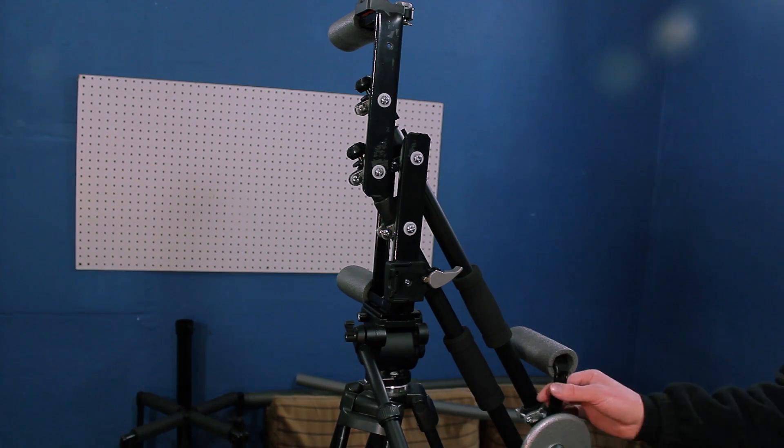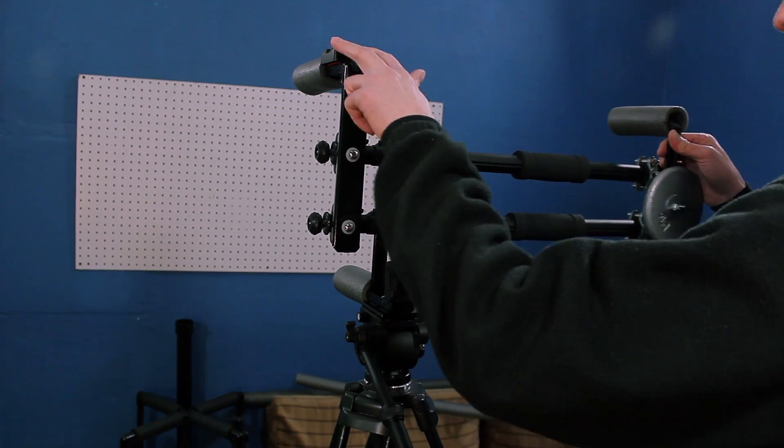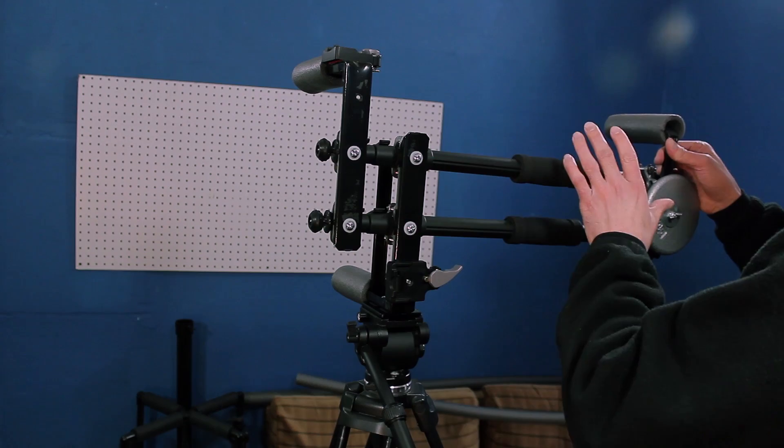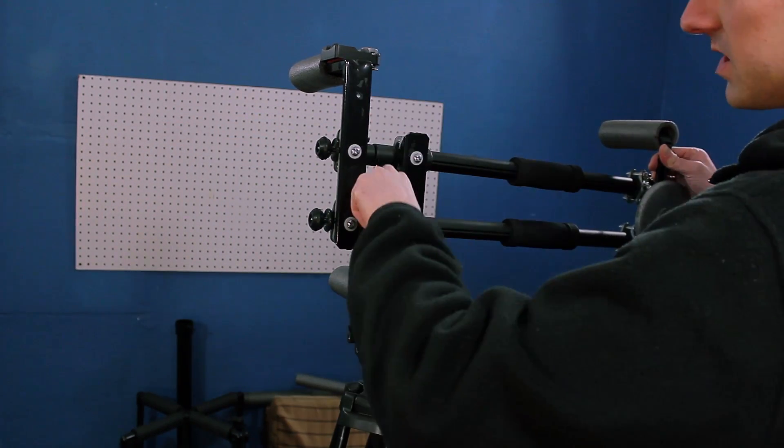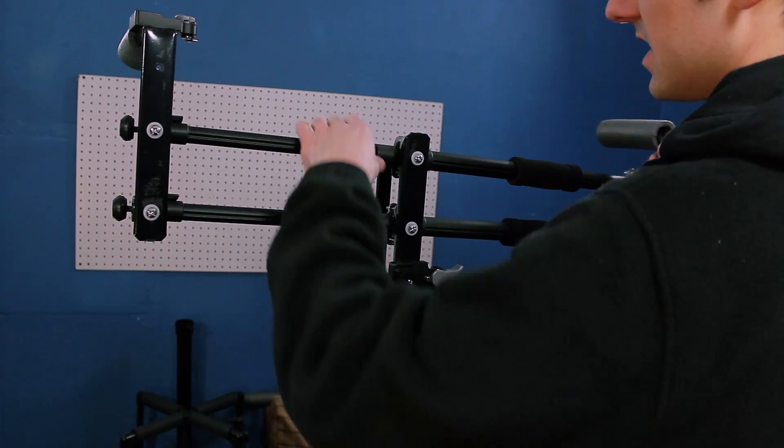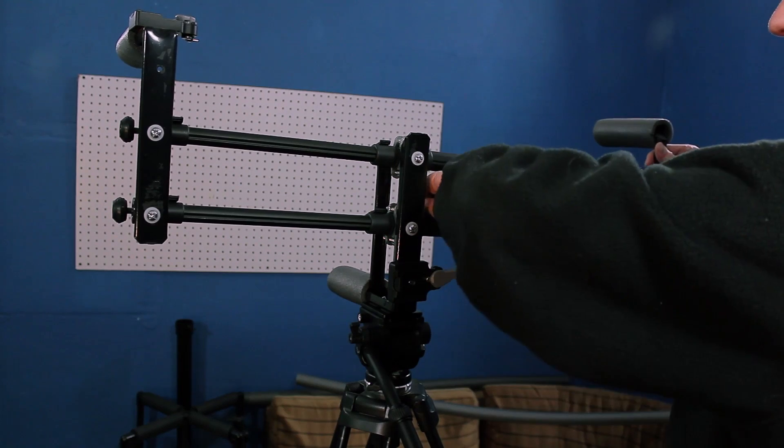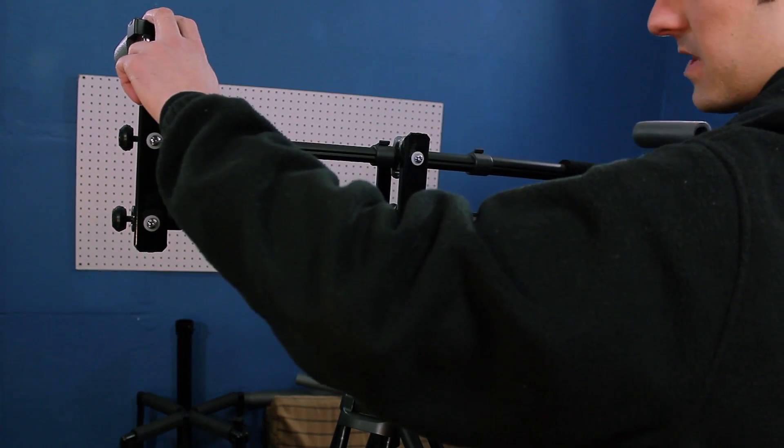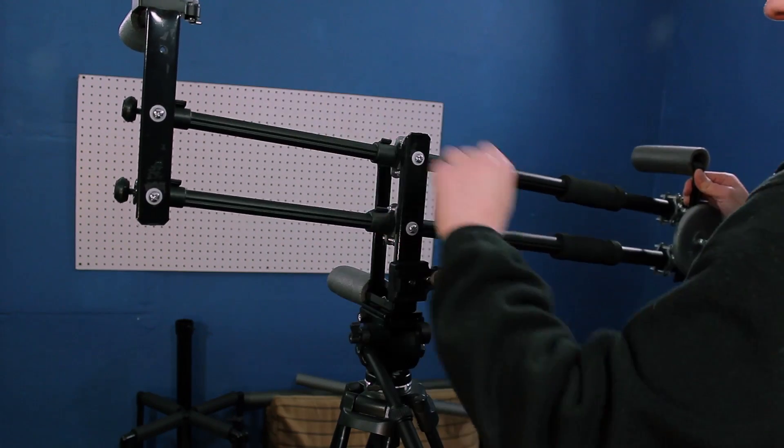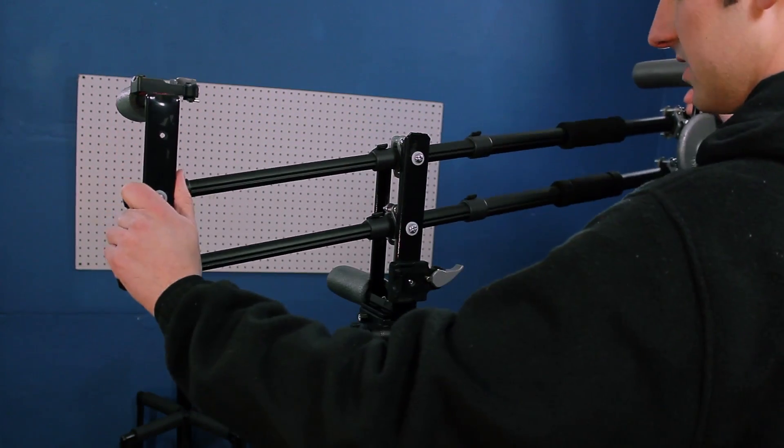Something else that you'll want to be aware of is when you actually go to attach your camera in weight, you will want to do that last. Make sure you extend this out to whatever point you want it to be extended to first, and then put your camera in weights on it. Otherwise, what can happen is that if this becomes a little bent or bowed from the weight, it could cause it to not slide out as smoothly and you might have some issues.